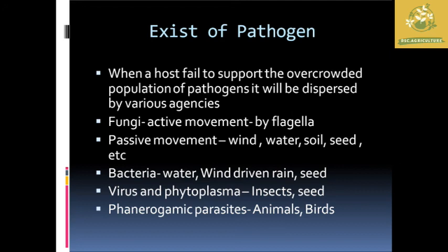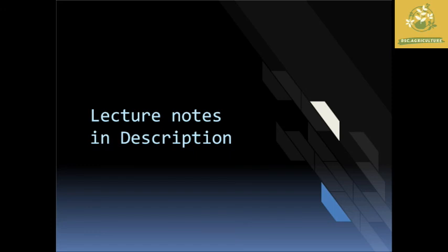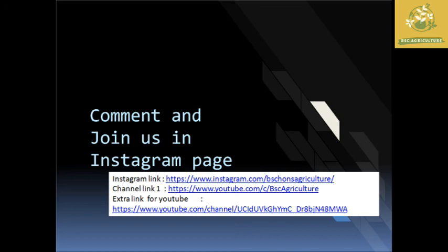When a host fails to support the overcrowded population of pathogens, they are dispersed by various agencies. Fungi can move actively by flagella, or passively by wind, water, soil, or even humans. Bacteria can transfer from one host to another by water, wind, or seeds. Lecture notes are available in the description, and viewers can reach out via Instagram or the YouTube channel comments for any doubts.